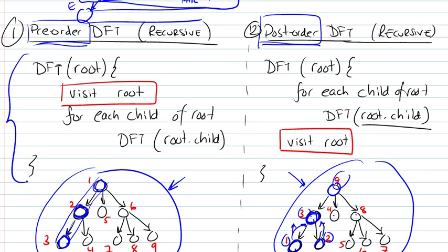These are implementations of the DFTs. So they are recursive implementations, so each method actually calls itself. If we look at this for a pre-order, basically the main difference between these two functions is that in the case of the pre-order, we visit the node before actually moving on to the next one, to its child node.